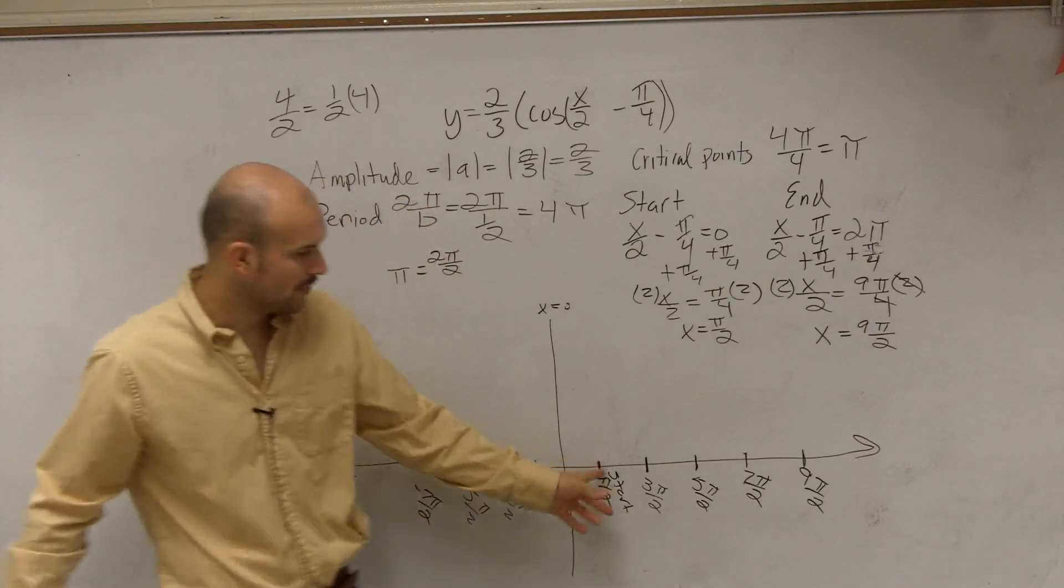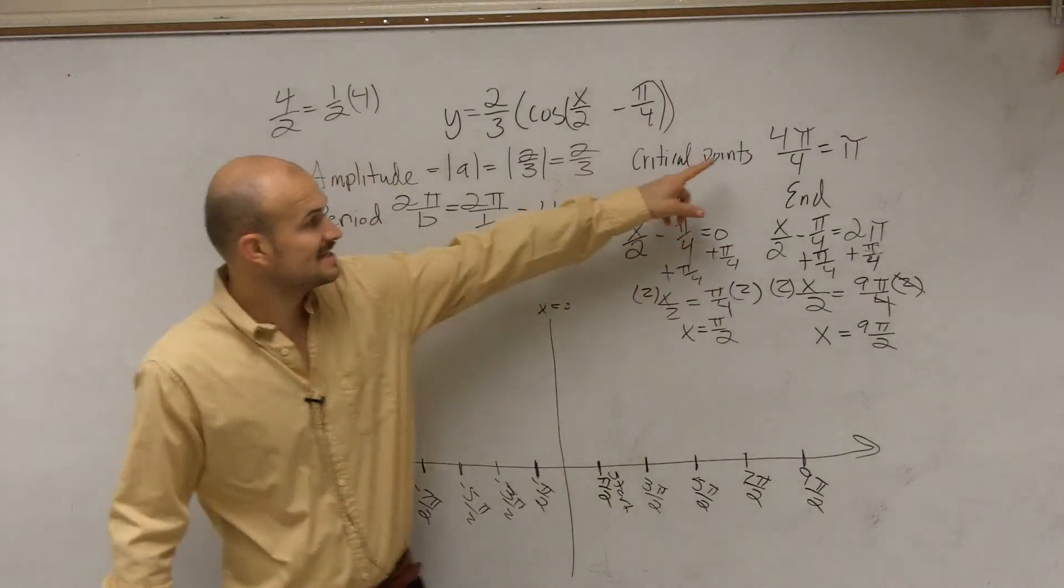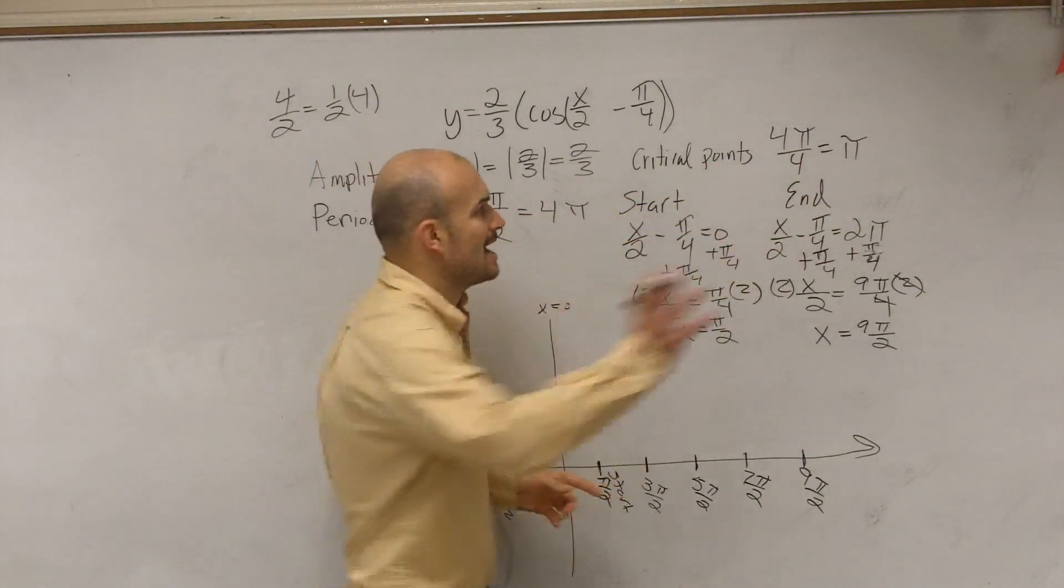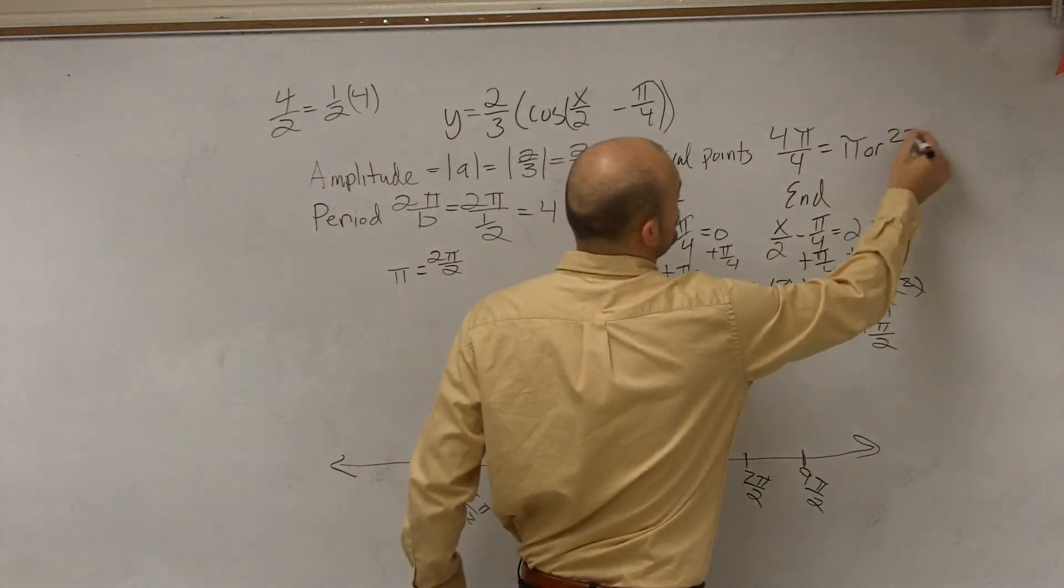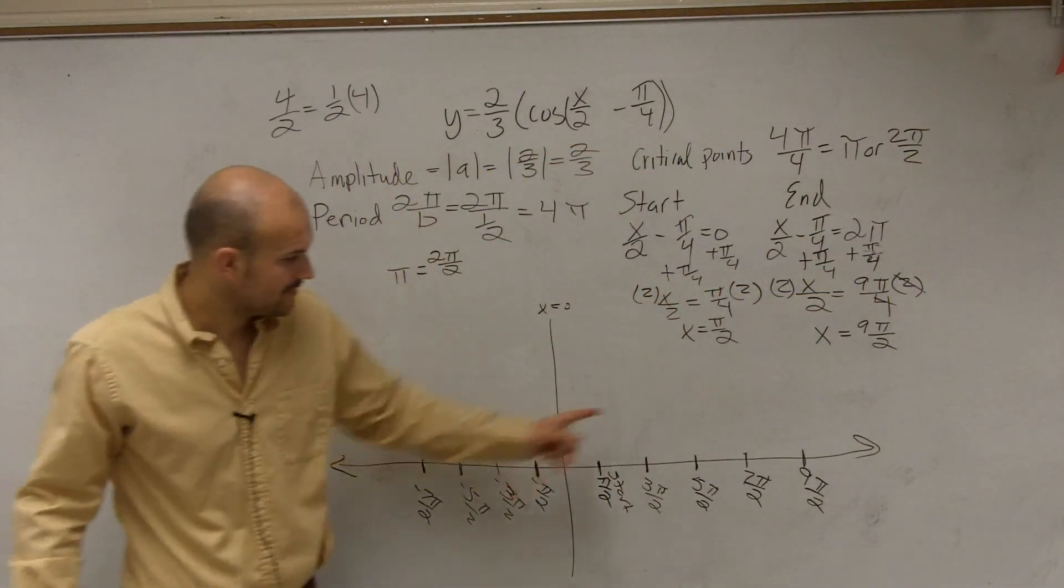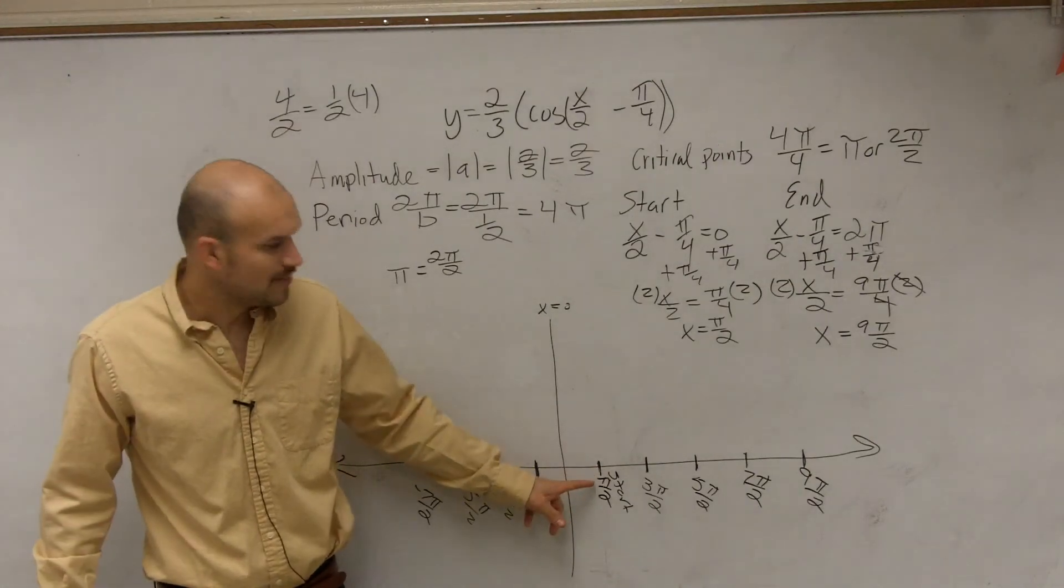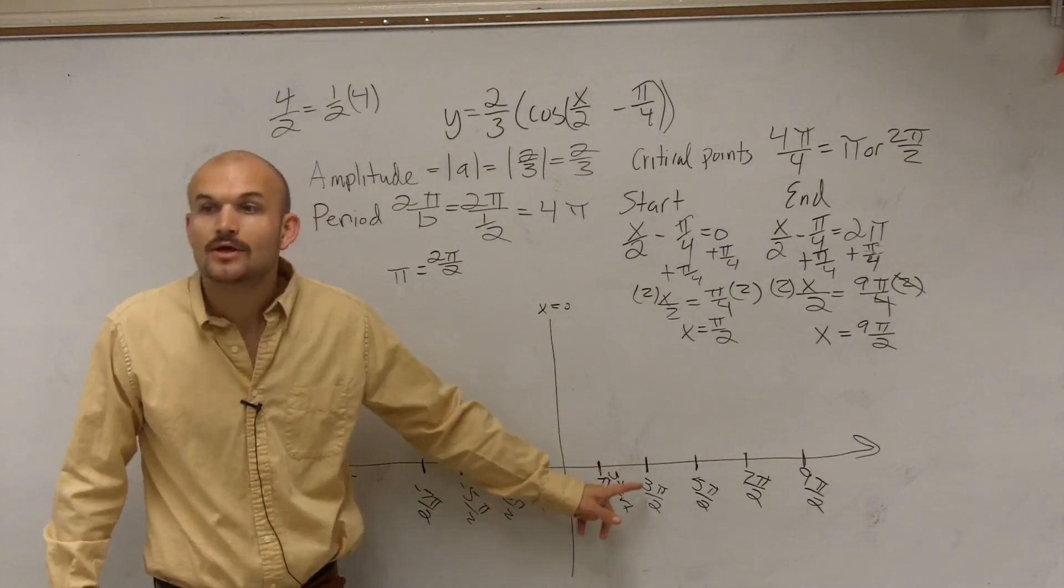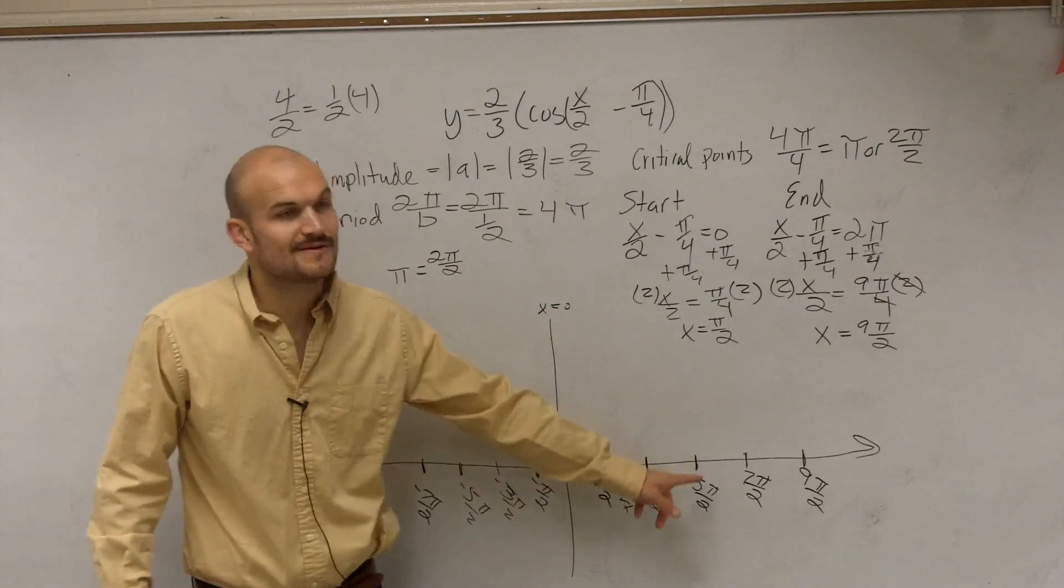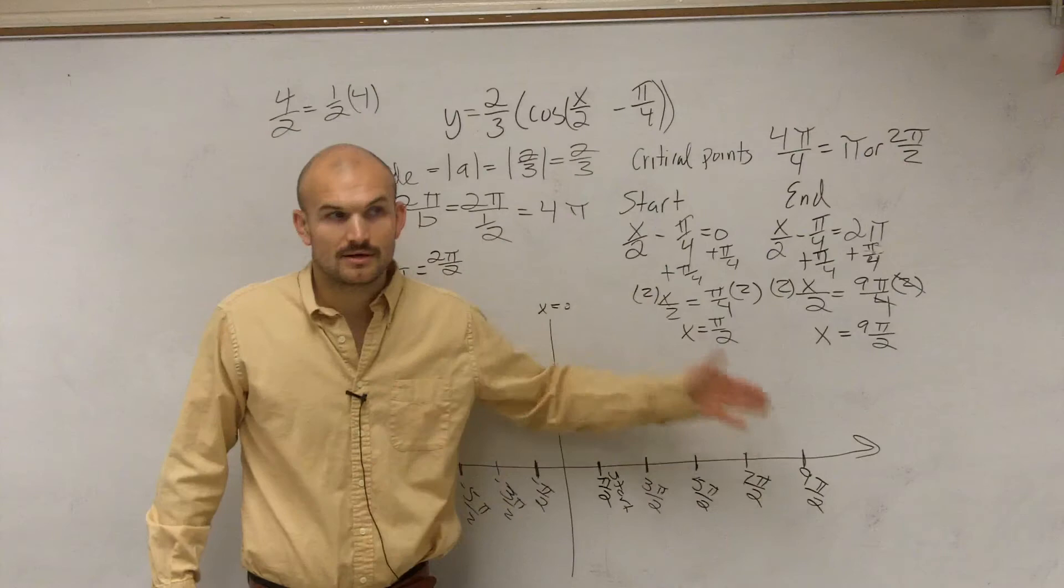So remember, there's four critical points, 1, 2, 3, 4, that we're going to create. The distance between each critical point is pi or 2 pi over 2. Pi and 2 pi over 2 are the same thing. So to go from here, to add 2 pi over 2, pi over 2 plus 2 pi over 2 is 3 pi over 2. 3 pi over 2 plus 2 pi over 2 is 5 pi over 2. Do you guys see how I keep on going with this?